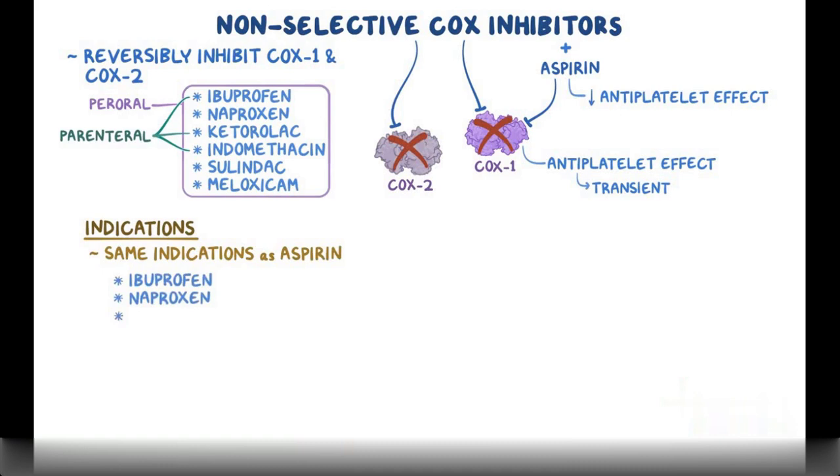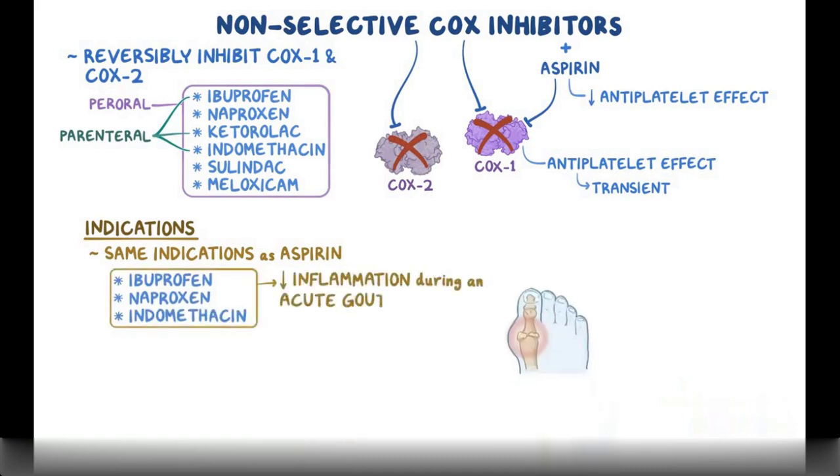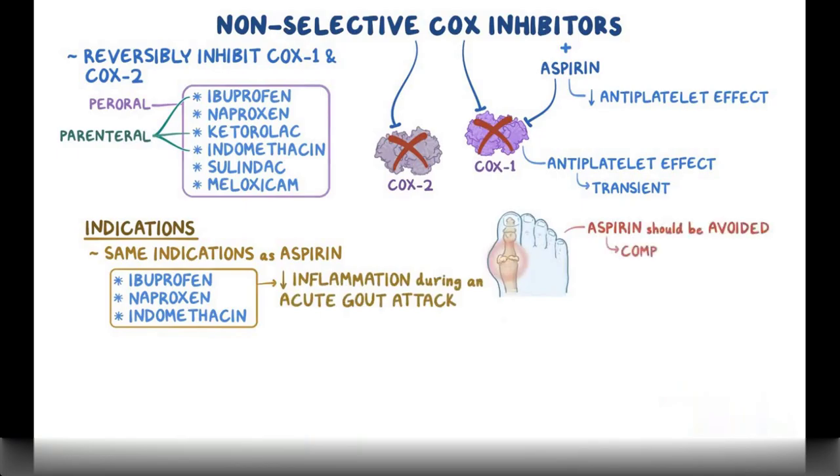However, ibuprofen, naproxen, and indomethacin are also used to reduce inflammation during an acute gout attack, where aspirin should be avoided since it competes with uric acid for excretion in the kidneys, which might worsen the symptoms of gout.